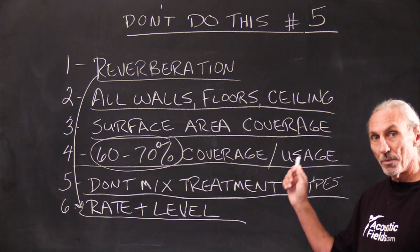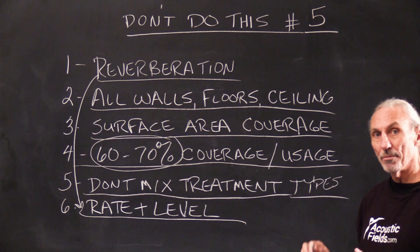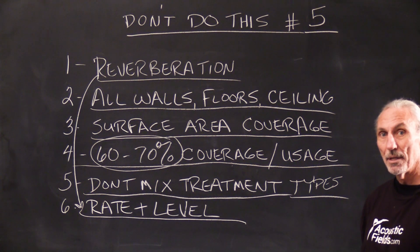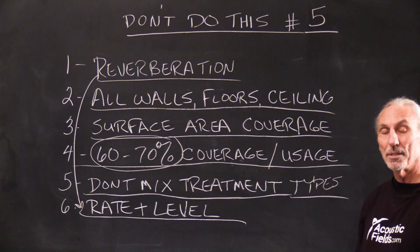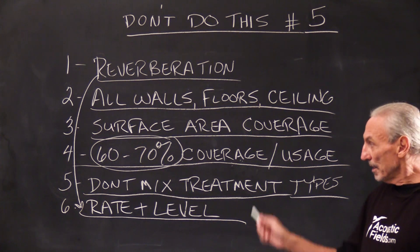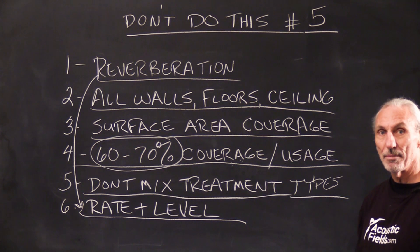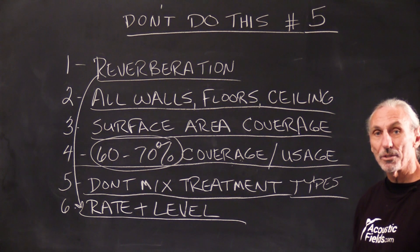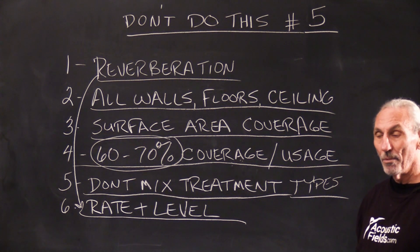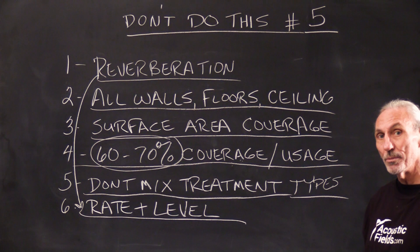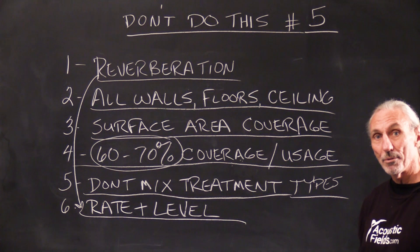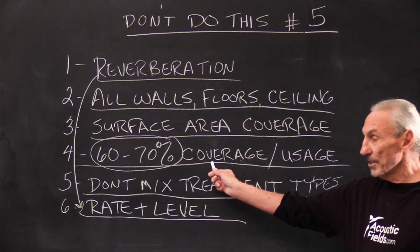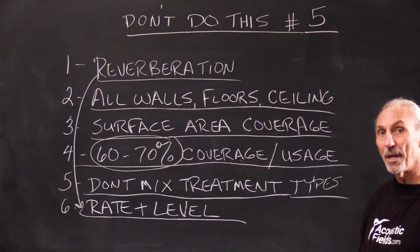Just remember, reverberation is the reflection of all the wall surfaces — easy to hear, not a difficult thing to identify. But here's the trick: getting that 60 to 70 percent coverage to bring the reverberation times down into the range you need for your usage. For control rooms, we like one second to one and a quarter seconds. Most rooms we see are three to three and a half seconds. So we've got to get this kind of coverage to bring them down into that range.